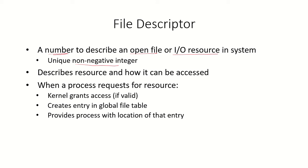Any file that has been opened or any input/output resource being used by the system is referred to by this file descriptor, which is a unique non-negative number. It describes the resource and how it can be accessed. Whenever a process requests any resource — whether a file or an I/O device — the kernel will grant access to that process, assuming the request is valid, and then create an entry for that resource in the global file table.